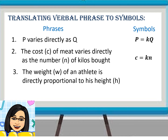Let us have another example: 'The weight of an athlete is directly proportional to his height.' The weight of an athlete is represented with W and H for his height. Can you write down your answer? Check if you arrive at W is equal to KH. I hope these examples are clear, because it is the basic foundation for solving direct variation.